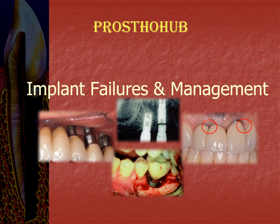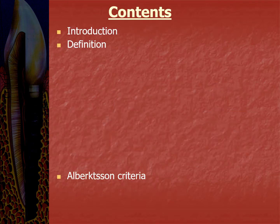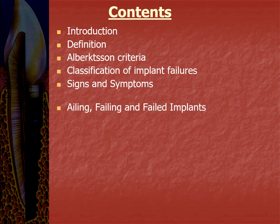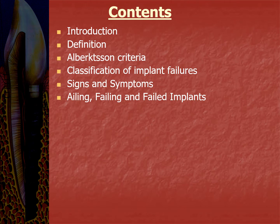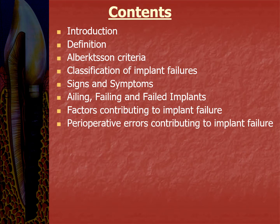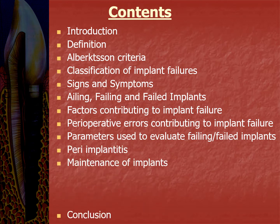Let us see the contents. Contents include introduction, definition, the Albertson criteria for implant success, classification of implant failures, the different signs and symptoms, what is ailing, failing and failed implant, the different factors contributing to implant failure, the perioperative errors that contribute to implant failure, the parameters used to evaluate failing or failed implants, peri-implantitis, maintenance of implant, and finally conclusion and references.